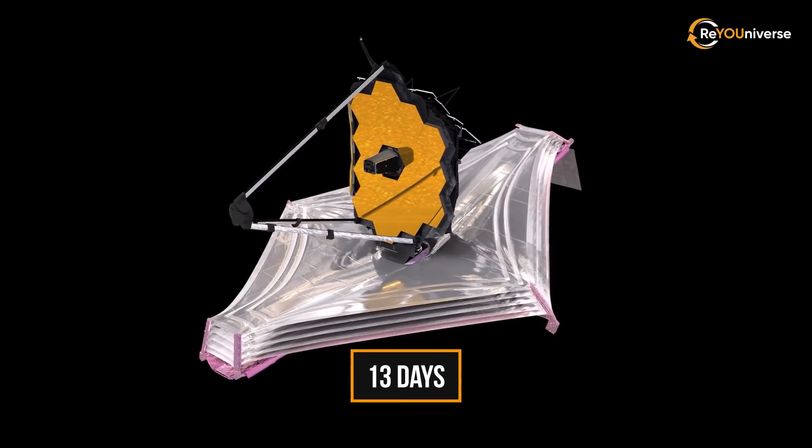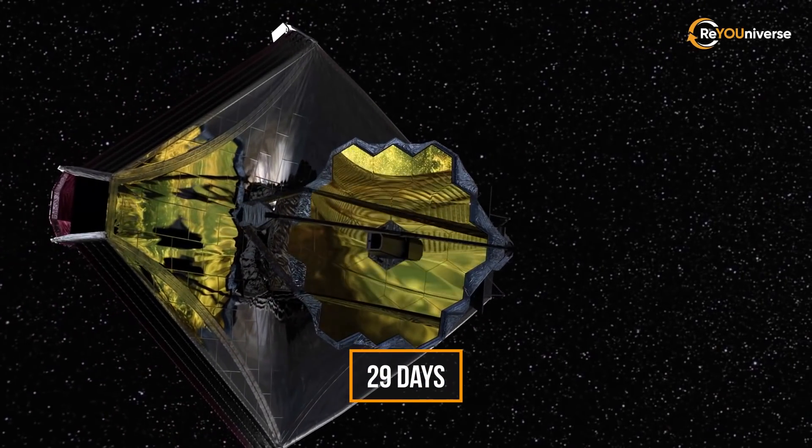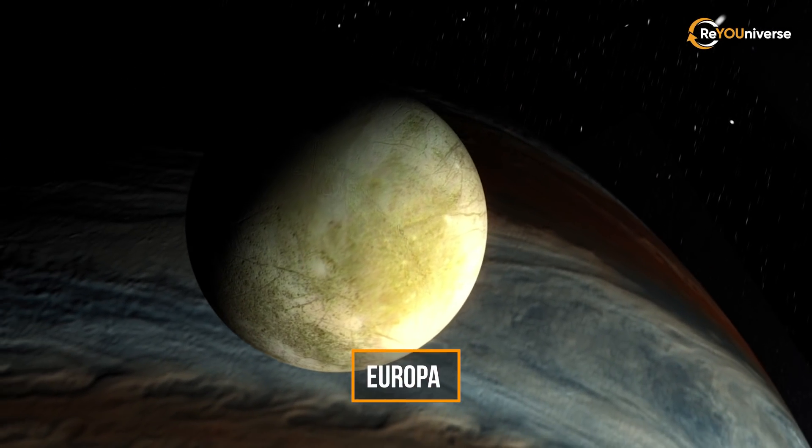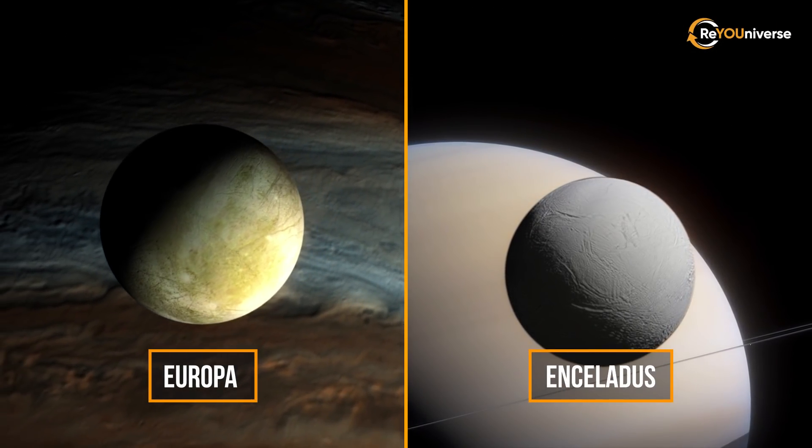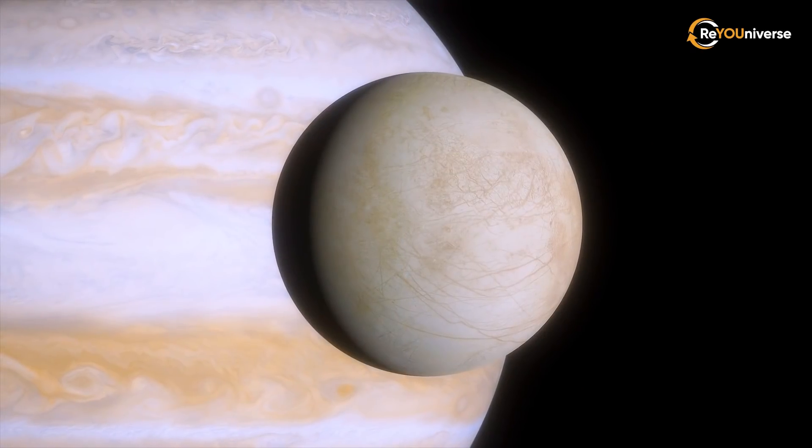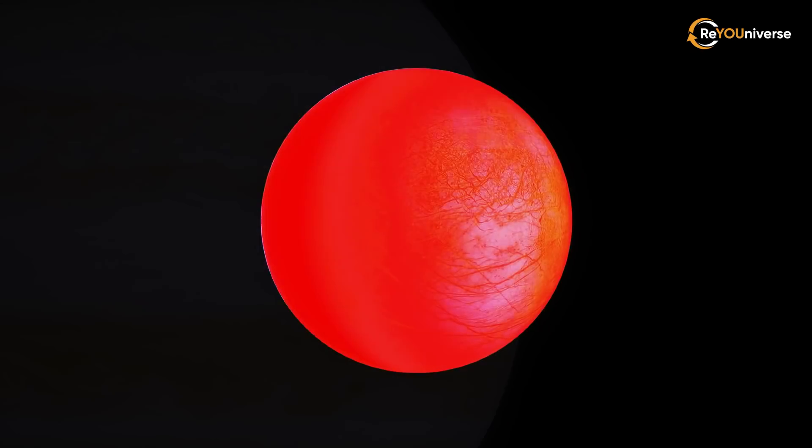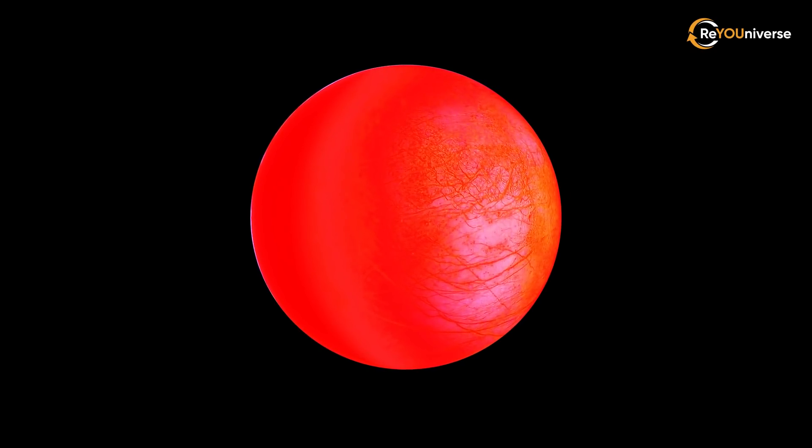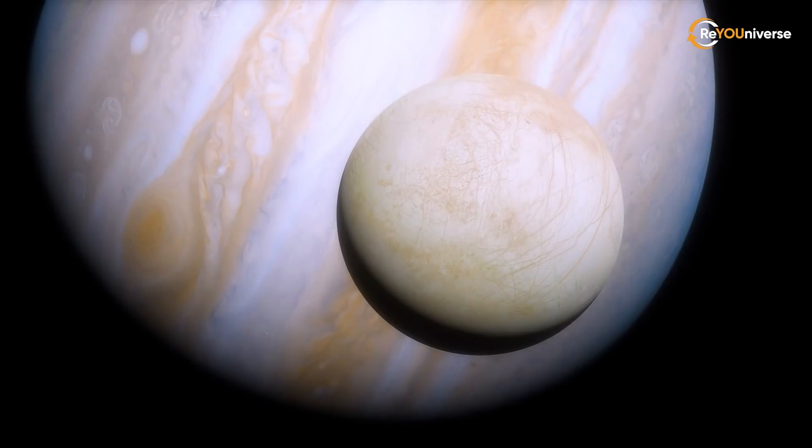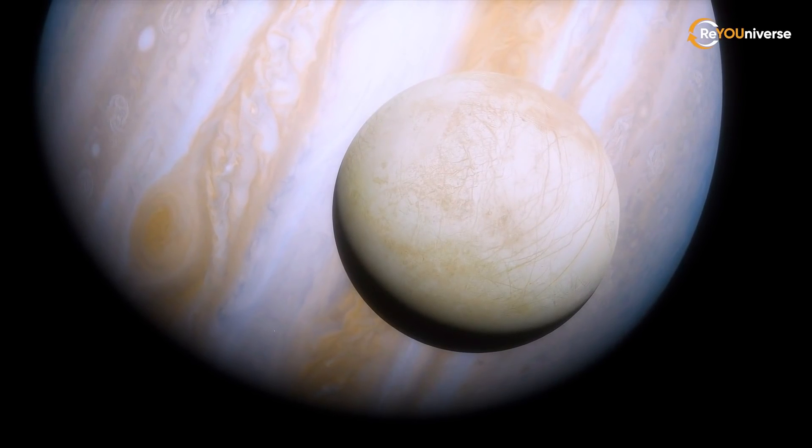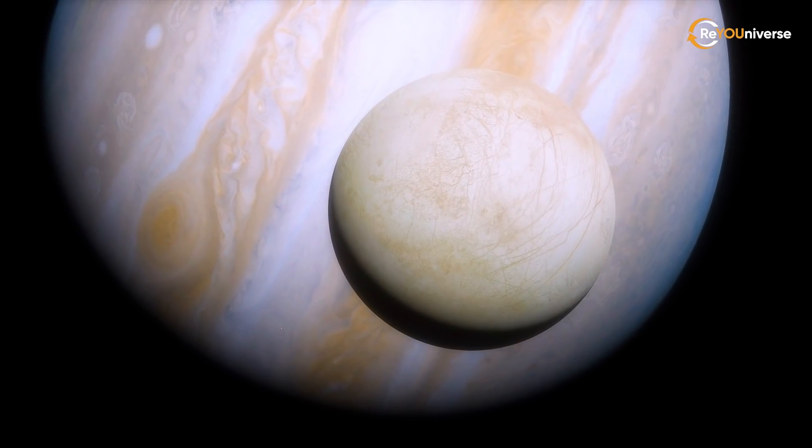Webb will study the watery worlds of the solar system, Jupiter's moon Europa, and Saturn's moon Enceladus. The near-infrared near-cam camera will be able to obtain high-resolution images of Europa to study its surface and find regions with geysers and high geological activity.